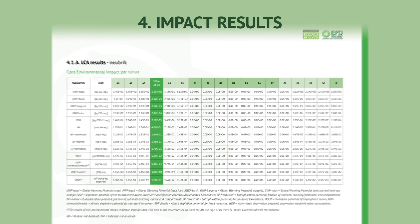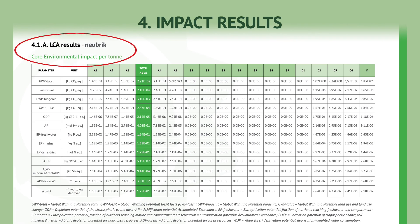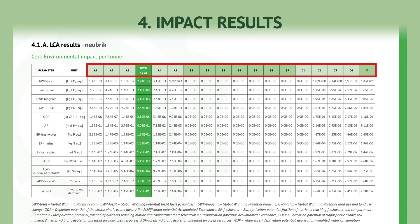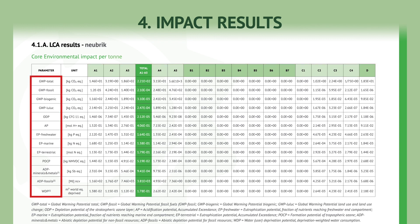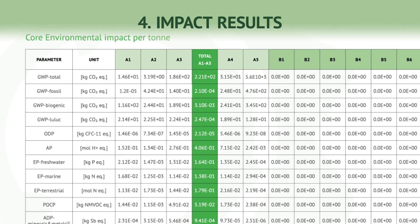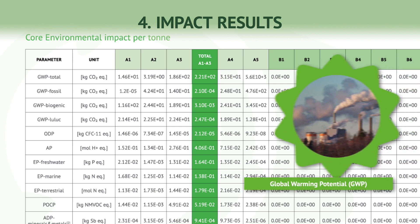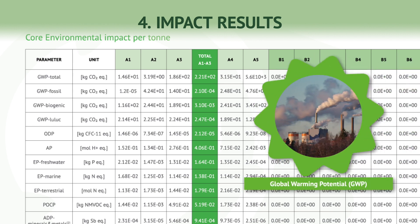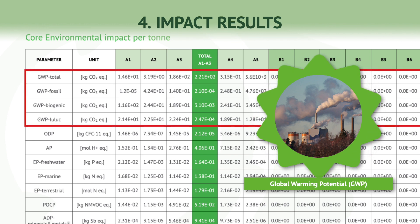We have now reached the impact results section, which is presented in tables. The columns in the tables represent the life cycle assessment stages, while each row represents a specific impact considered. The first indicator is Global Warming Potential, or GWP. This indicator measures the carbon dioxide (CO2) and greenhouse gas (GHG) emissions associated with the product. It is often referred to as carbon footprint.